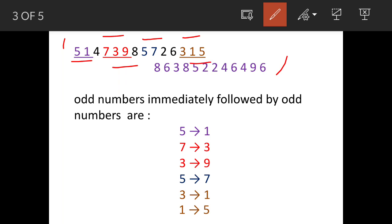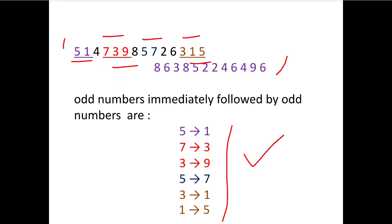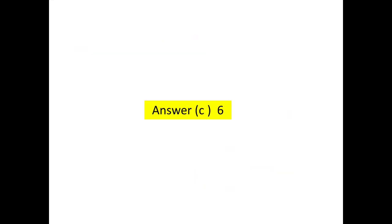If you count all of them, the total is 6. There are 6 odd numbers which are followed by odd numbers. So our answer is option C: 6.